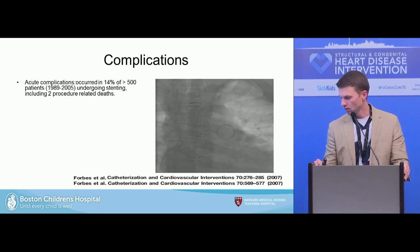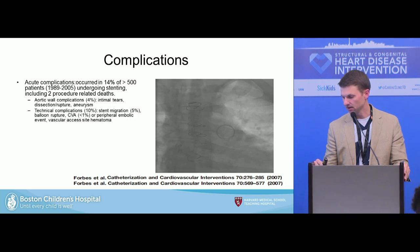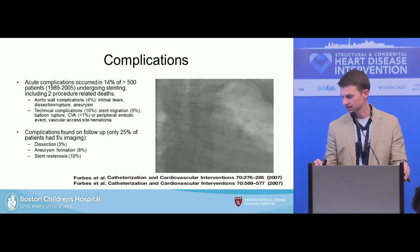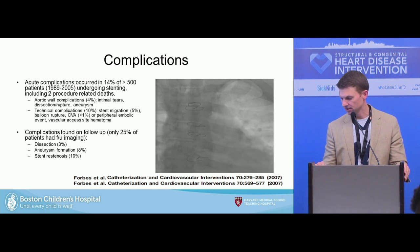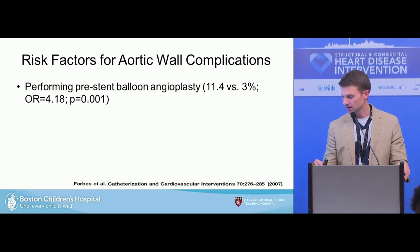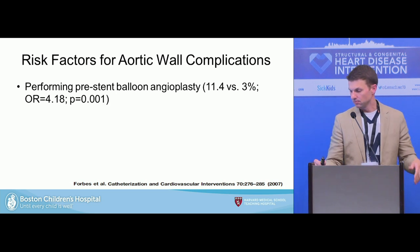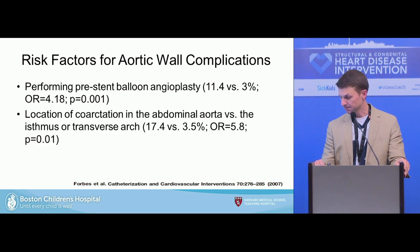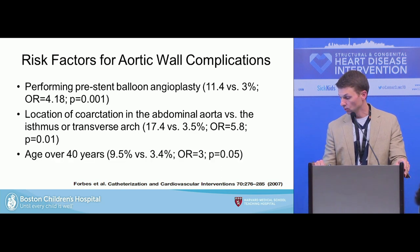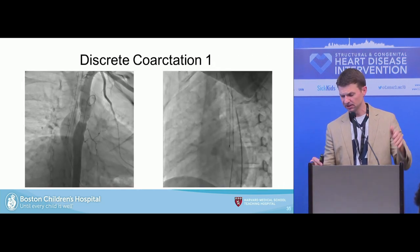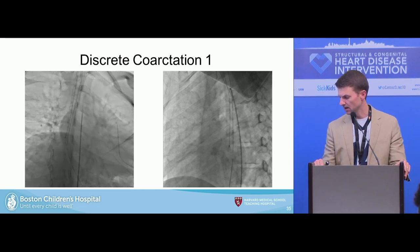Forbes looked at over 500 patients from 1989 to 2005. There were two deaths, 4% aortic wall complications, and 10% technical complications — some related to older equipment and techniques. On follow-up, there were 3% dissections, 8% aneurysm formation, and 10% stent restenosis. Risk factors for aortic wall complication included pre-stent balloon angioplasty, the location of coarctation — abdominal aorta versus isthmus or transverse arch — older age, and expanding lesions above 3.5 times the narrowest margin.